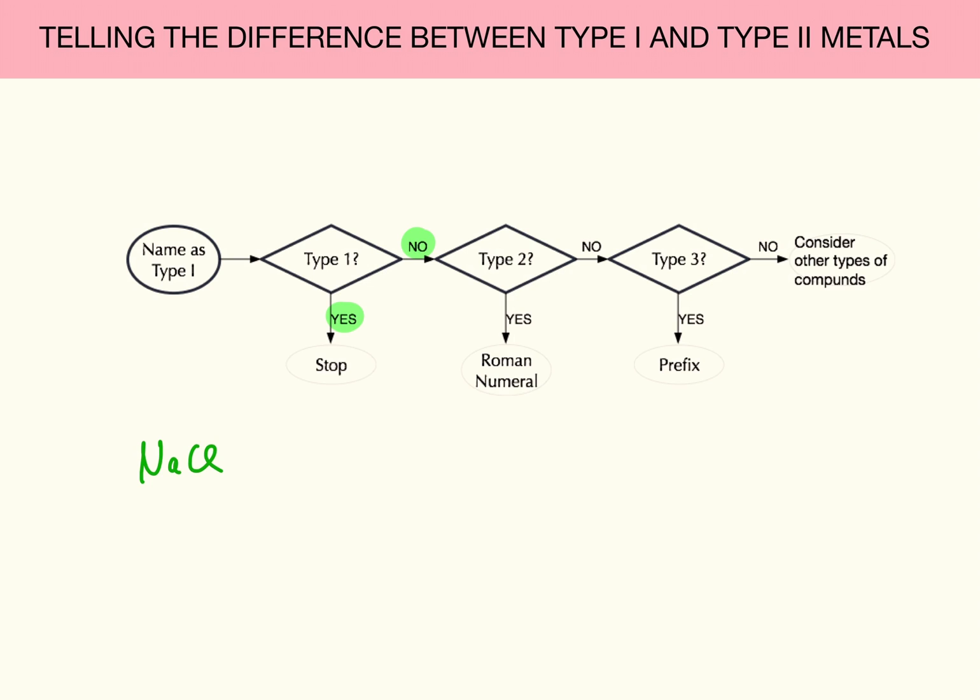How do I know there's only one version of sodium chloride? But there's two versions of copper chloride. How do I know there's only one version of magnesium chloride? But there's two versions of tin chloride.